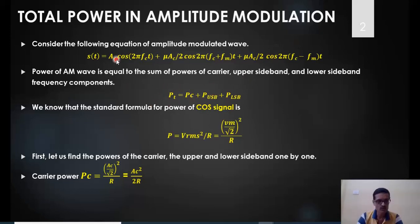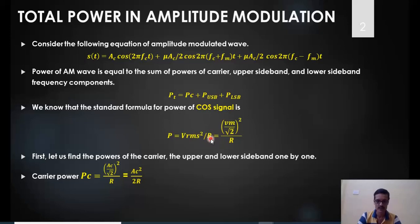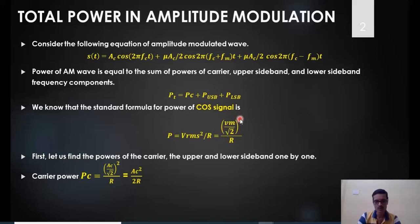Since these are peak amplitudes, we represent power using RMS values with the formula P = V²/R. The relationship between peak voltage and RMS voltage is V_RMS = Vm/√2, or equivalently, (Vm/√2)² / R. We will use this standard formula to calculate PC, PUSB, and PLSB in terms of their RMS equivalents.